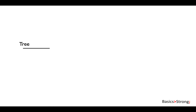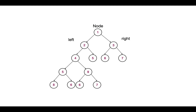Hey guys, welcome back. In the last lecture we talked about how we can identify if a problem includes trees. In this lecture we are going to talk about how we can approach these kinds of problems. To solve such problems, recursion is a powerful tool. A binary tree object is itself a recursive object or a recursive structure.